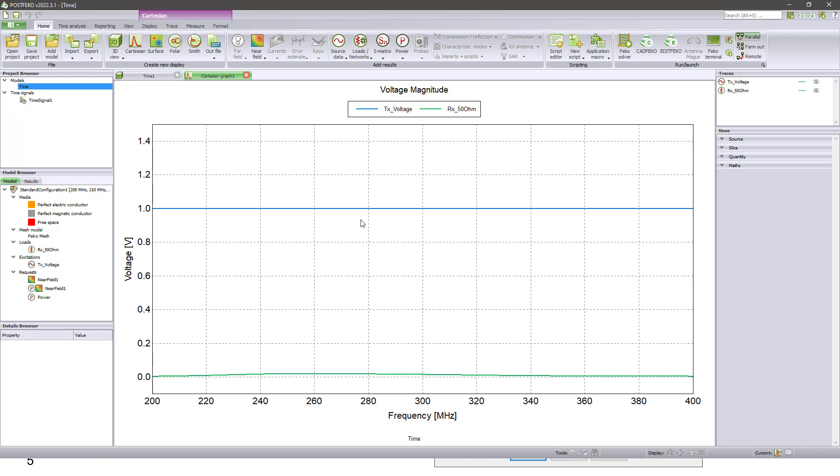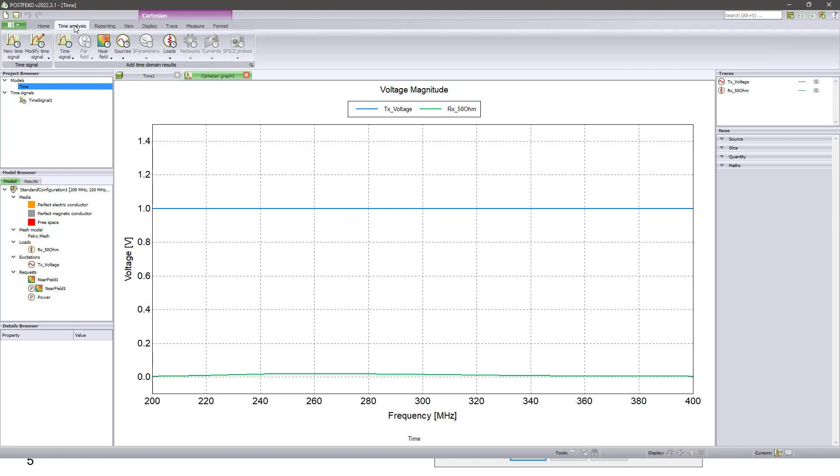So the next step is go to time analysis and new time signal. So here, I already defined a time signal using this one. Then we can see the modified time signal here.